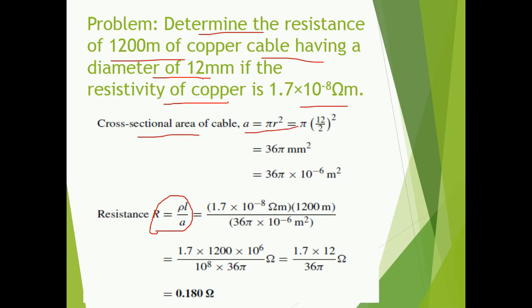The diameter is 12 mm, so the radius is diameter divided by 2. We need to convert millimeters into meters, that is 10⁻³. Since it is squared, it comes out to be 10⁻⁶. Substituting all the values — rho, L, A — into the formula, the answer comes out to be 0.180 ohm.